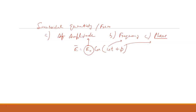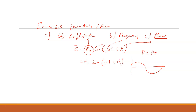Now, what is the meaning of sinusoidal quantity diagrammatically? The wave is moving like this — it may be in the form of cosine or in the form of sine. If it is in the form of sine, then we can write it as sin(ωt + φ₁), where φ₁ equals φ + π/2. So there is a phase change of π/2.